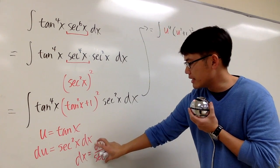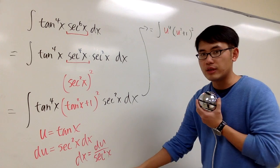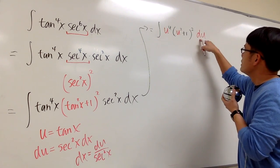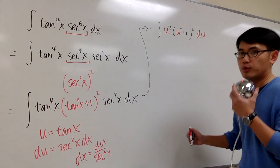Or if you would like, you can plug in du over secant squared into dx, and then they will cancel each other out. Let me just write down du right here for you guys. du is the same as secant squared x dx, just a direct replacement.